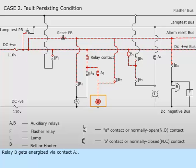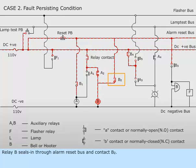Relay B gets energized via contact A sub 2. Relay B seals in through alarm reset bus and contact B sub 2.